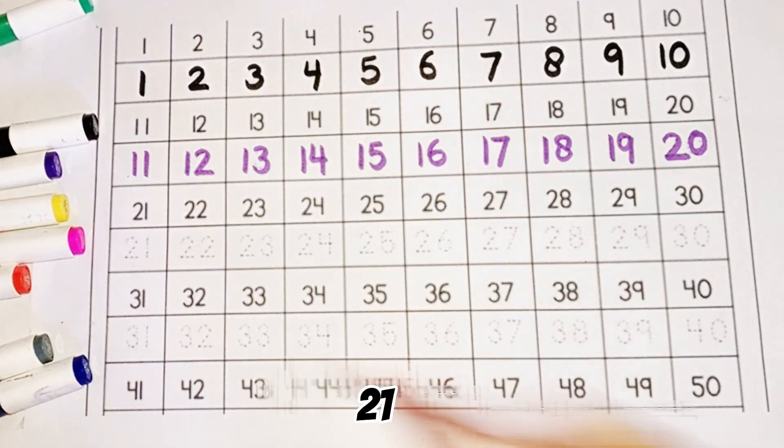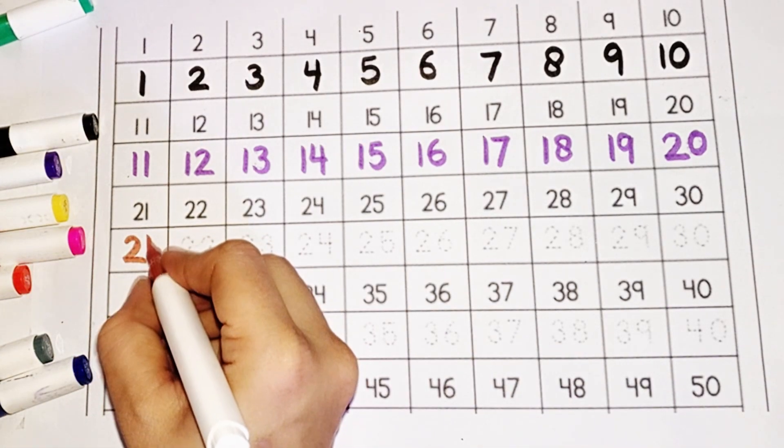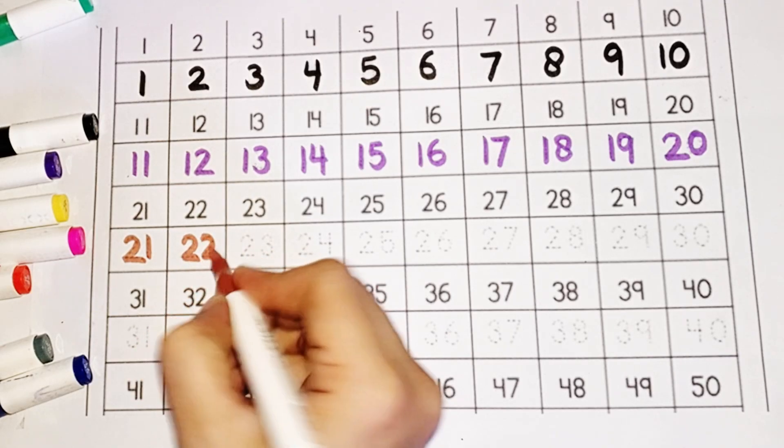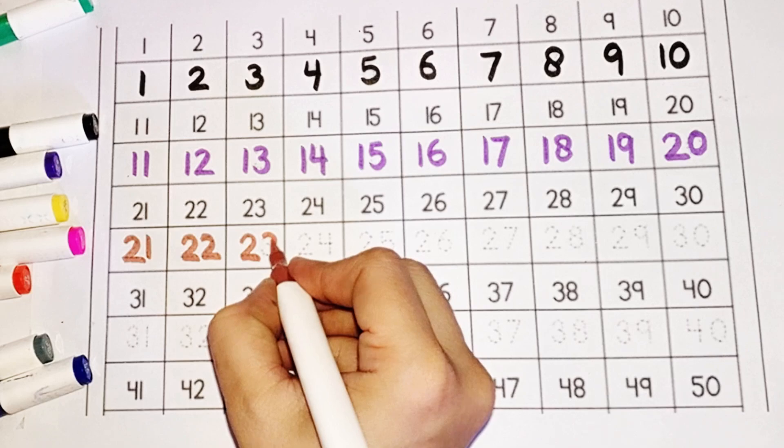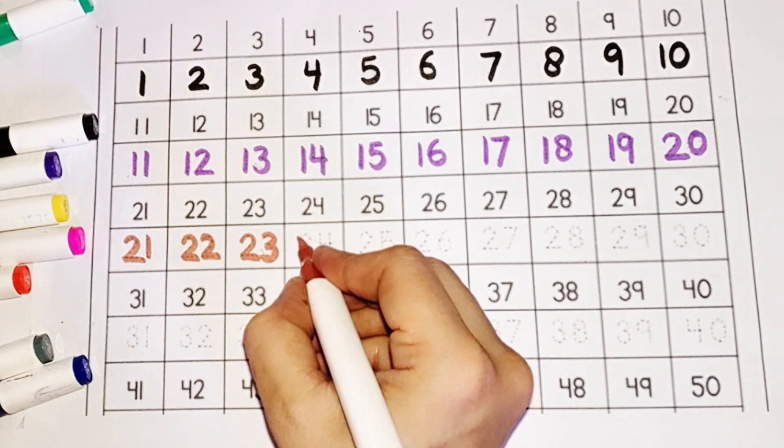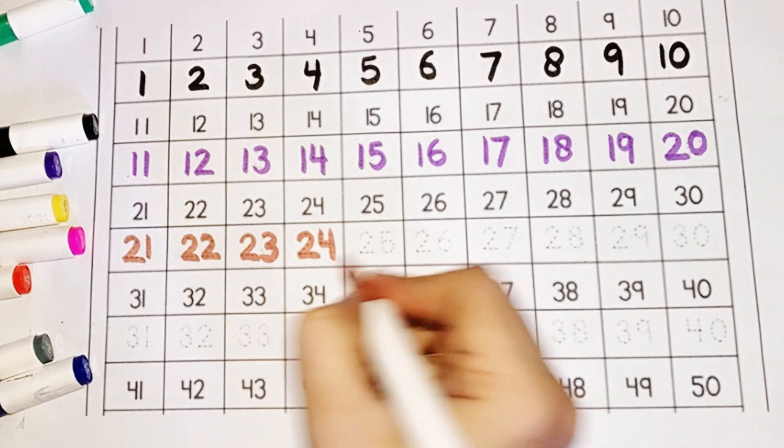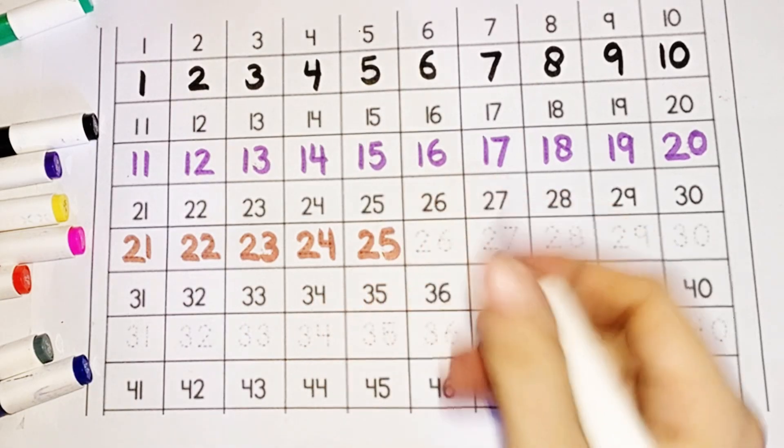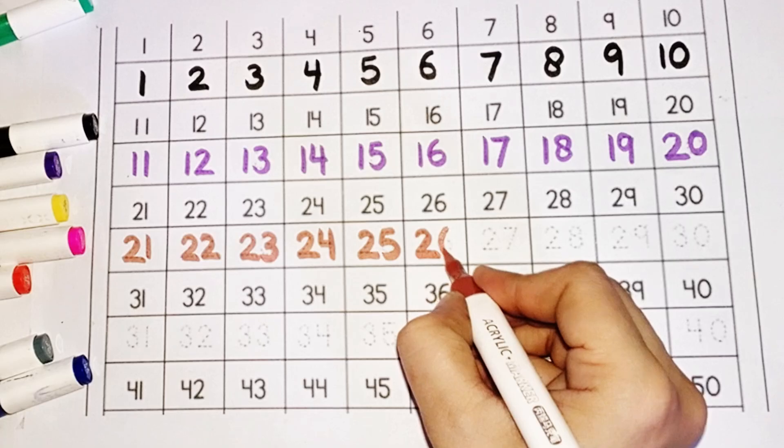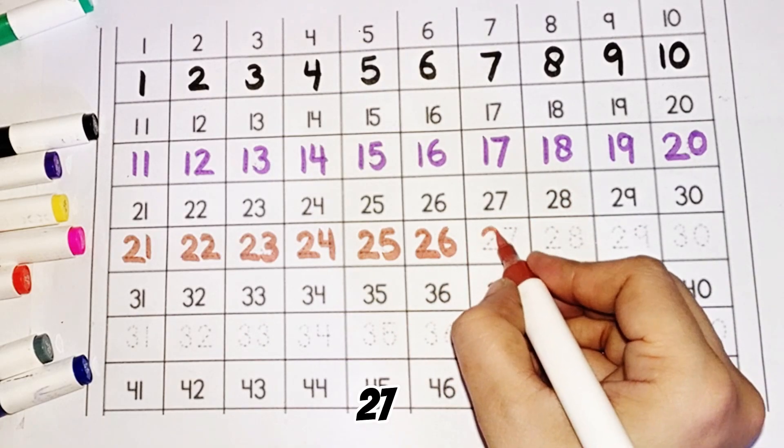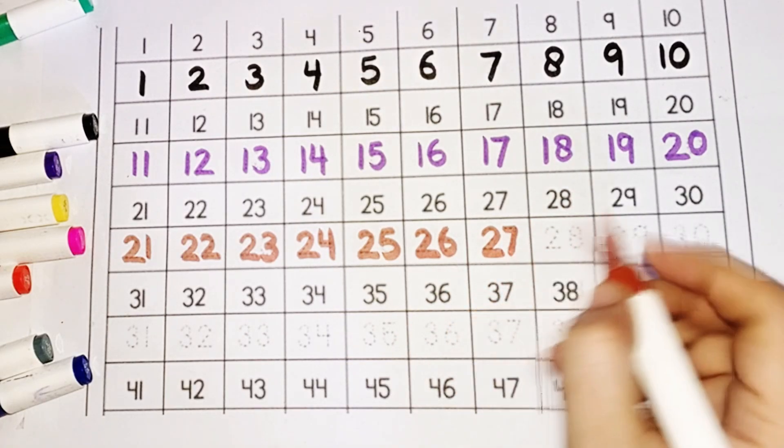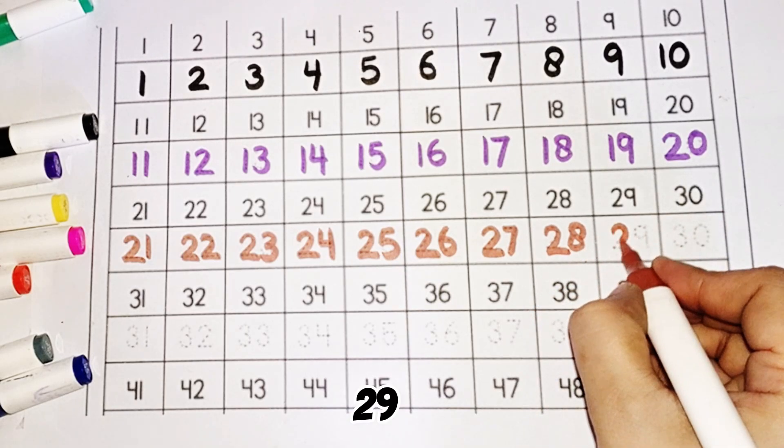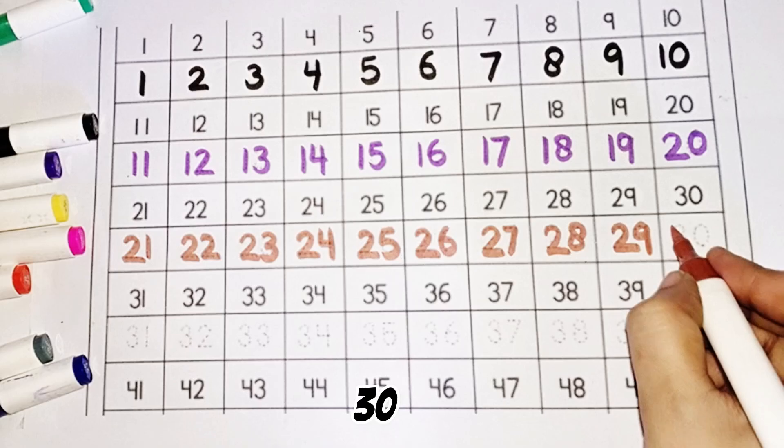Twenty-one, twenty-two, twenty-three, twenty-four, twenty-five, twenty-six, twenty-seven, twenty-eight, twenty-nine, thirty.